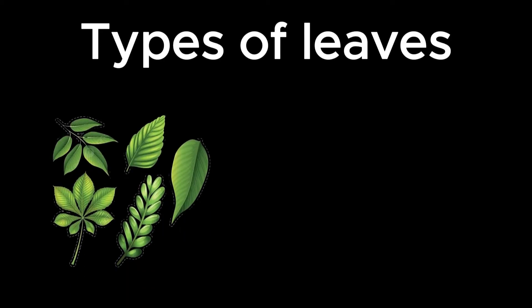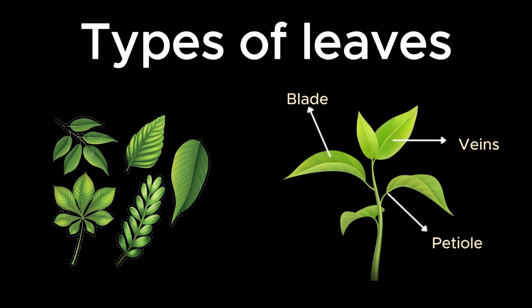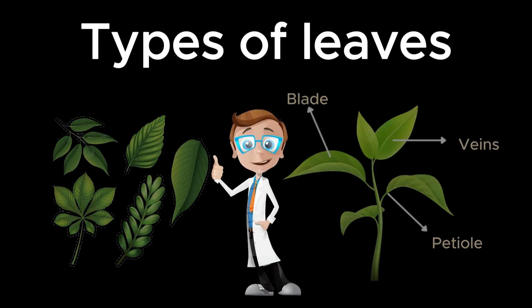You may have noticed different types of leaves around you daily. They share the same parts, but their appearance and pattern differ. To study and understand them well, scientists categorize them into different types based on various characteristics. Let's have an overview of these categories and features used in leaf classification.